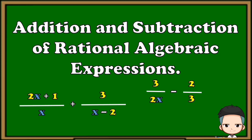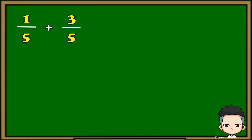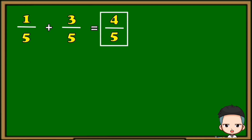We have here 1 over 5 plus 3 over 5. In addition and subtraction of rational algebraic expressions, we always check the denominators. Here the denominators are the same. If the denominators are the same, all we have to do is copy the denominator. And since the operation here is addition, we're going to add the numerators. 1 plus 3 is 4, so 4 over 5 is our final answer.